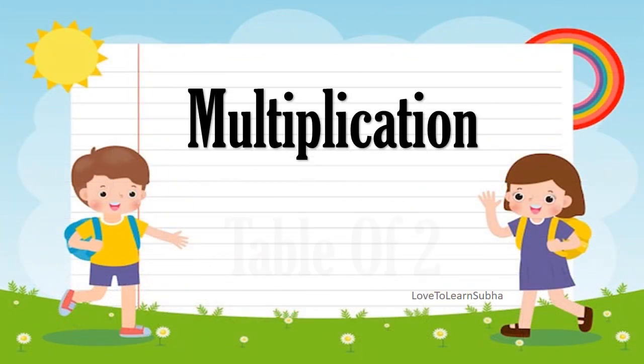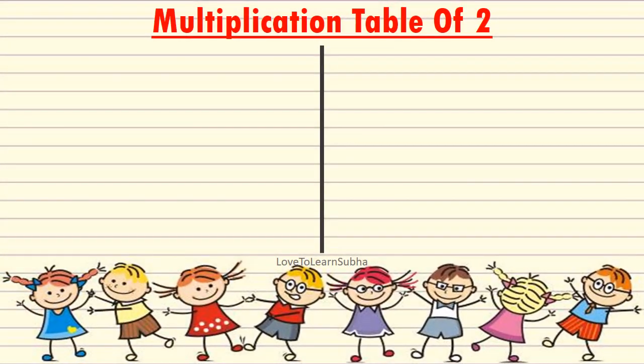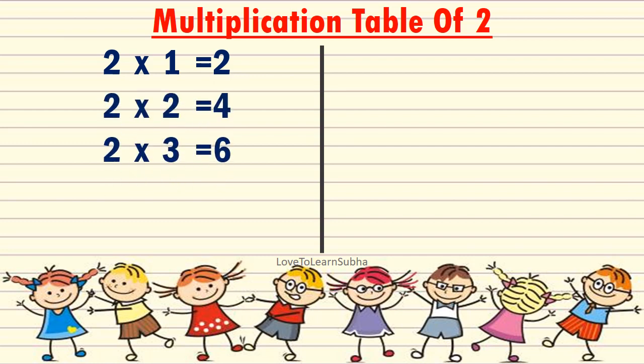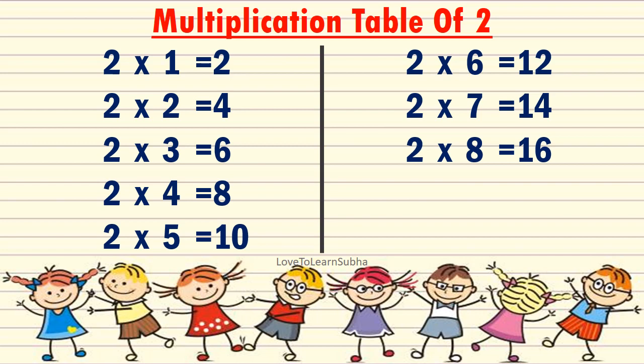Multiplication table of 2: 2 1s are 2, 2 2s are 4, 2 3s are 6, 2 4s are 8, 2 5s are 10, 2 6s are 12, 2 7s are 14, 2 8s are 16, 2 9s are 18, 2 10s are 20.